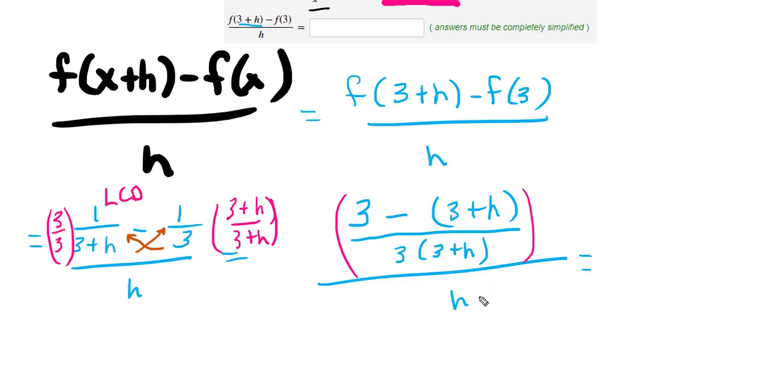What happens is this ends up coming up here. So to write this out: 3 minus 3 minus h—you see how I distributed that negative—and then on the bottom, I would have 3 times h all over 3 plus h.